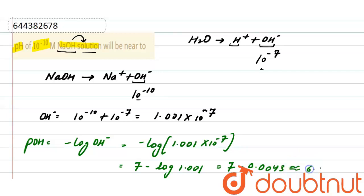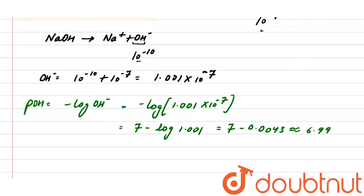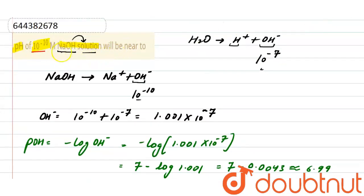Now moving on, as we know pH plus pOH equals 14. And from here, pH will be 14 minus 6.99, that means 7.01 is the pH of this 10 raised to the power minus 10 molar NaOH solution.